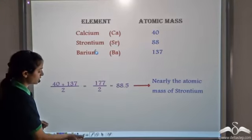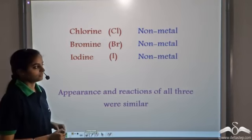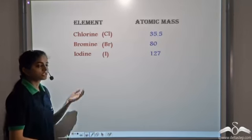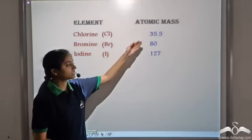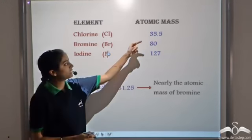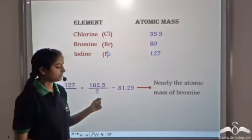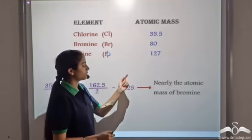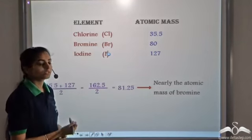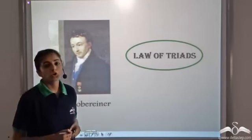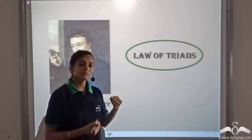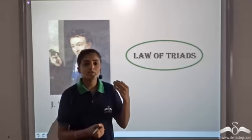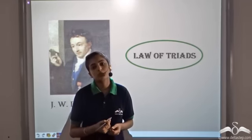He repeated this for another family of elements: chlorine, bromine, iodine. The three of them are non-metals and they show the same appearance and reactions. He arranged them in increasing order of atomic mass and found the mean of the first and the third element. It came out to be 81.25, which was nearly equal to the atomic mass of bromine. Based on these observations, Döbereiner gave the law of triads, according to which when three elements belonging to a triad are arranged in increasing order of atomic mass, the average of the first and the third element gives the atomic mass of the middle element.